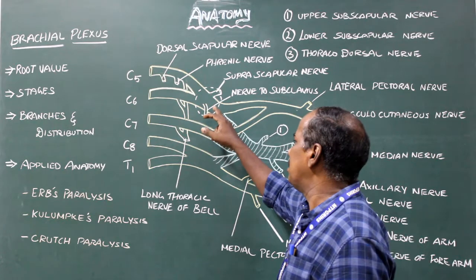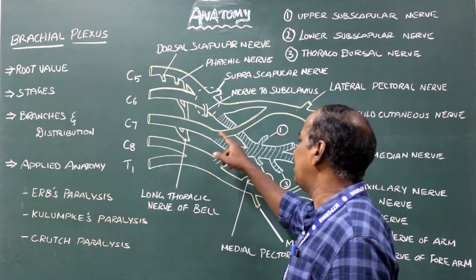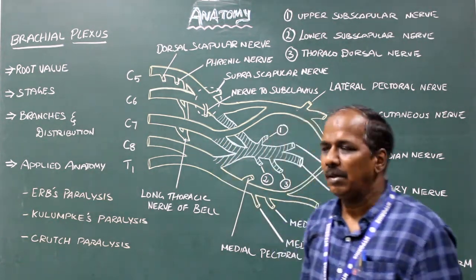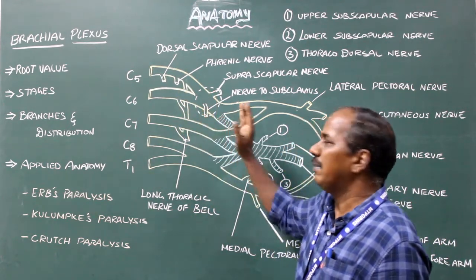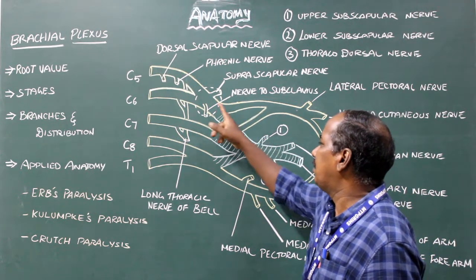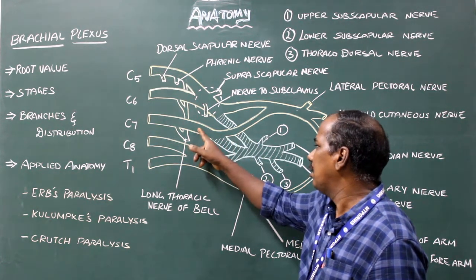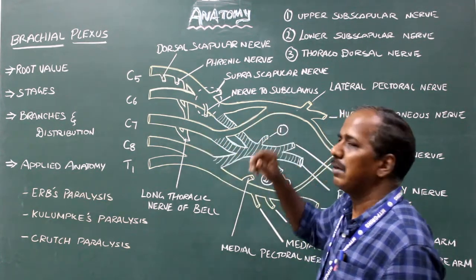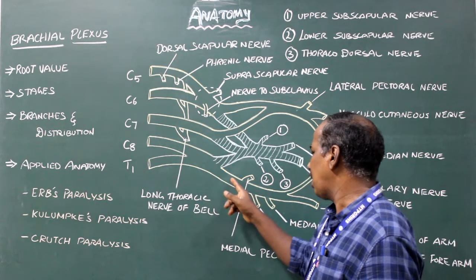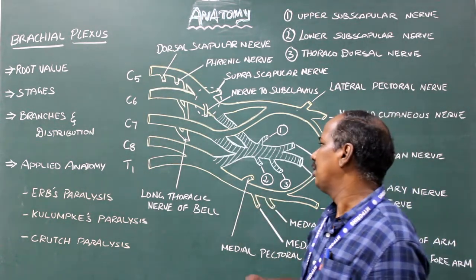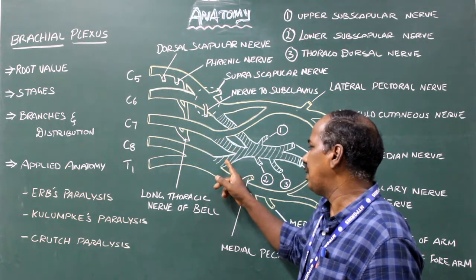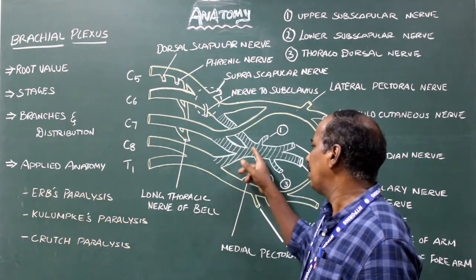Each trunk divides into anterior and posterior division. The anterior division of the upper trunk and the anterior division of the middle trunk join to form the lateral cord. The anterior division of the lower trunk continues as the medial cord. The posterior divisions of the upper trunk, middle trunk and lower trunk join to form the posterior cord.